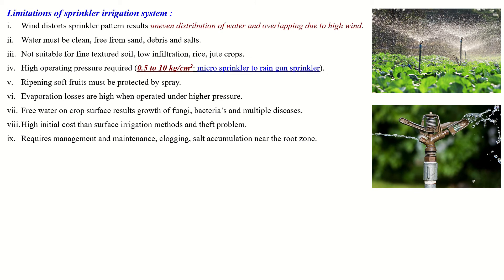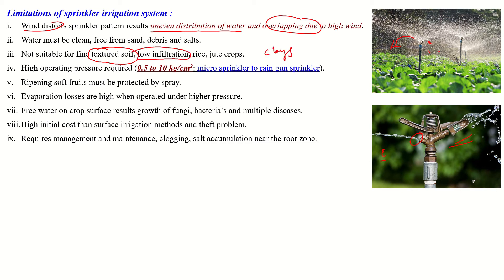The major limitation of this system is uneven distribution of water under windy conditions. Water falls in the form of raindrops, so when high wind is there, the raindrops are disrupted, and overlap may occur. Clean water is required; otherwise, if there is sand or any debris, the nozzle may clog, and the efficiency of the sprinkler will reduce. This system is not suitable for fine texture soil like clay soil where the low infiltration rate is there. So the sprinkler system is well suitable only for sandy soil.